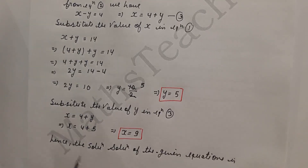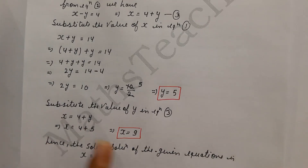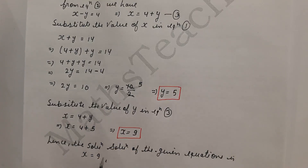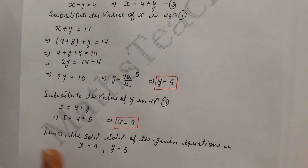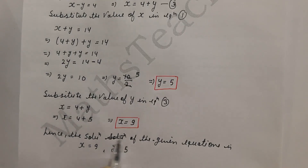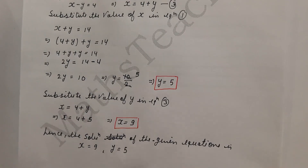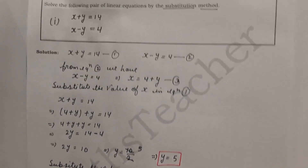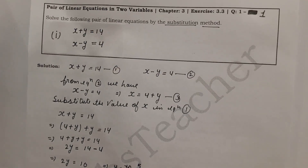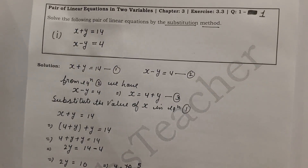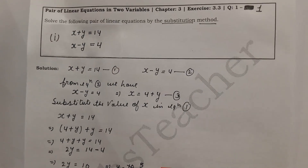Hence the solution of the given equations is x equals 9 and y equals 5. If you will write the final answer, write: the solution of the given equation is x equals 9 and y equals 5. I hope you have understood the substitution method. If there is any doubt, comment in the comment box. Thank you and don't forget to like, subscribe, and press the bell icon.